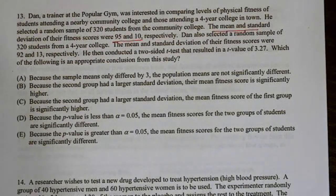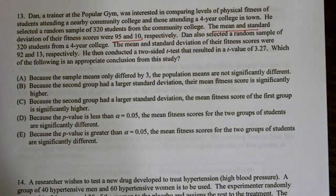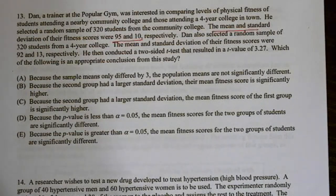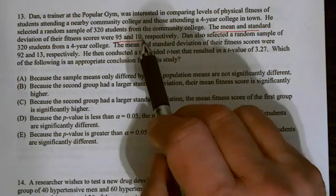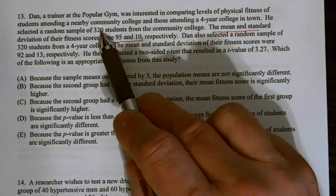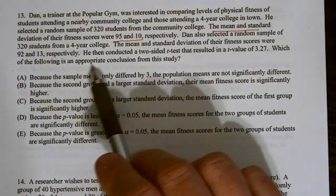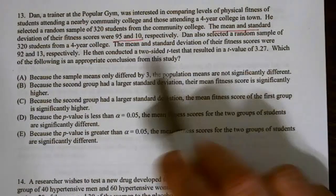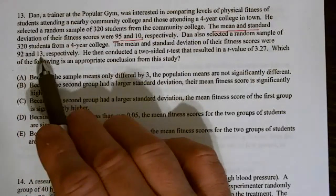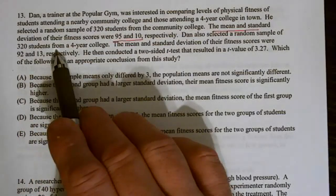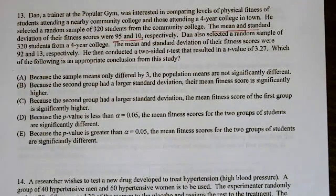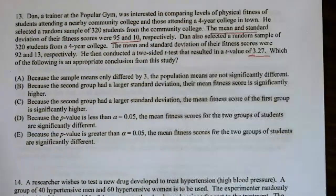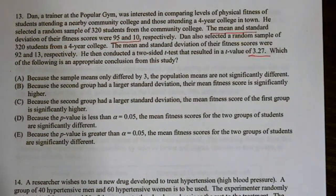Dan, a trainer at a popular gym, was interested in comparing levels of fitness of students attending a nearby community college and those attending a four-year college. He randomly selected a sample of 320 students from the community college, and the mean and standard deviation of their fitness were 95 and 10. Dan also selected a random sample of 320 from a four-year college. The mean and standard deviation of their fitness scores was 92 and 13. They conducted a two-sided t-test that resulted in a t-value of 3.27.